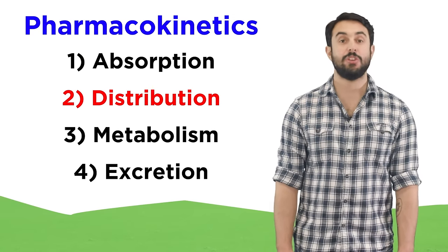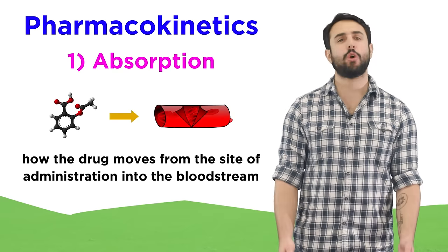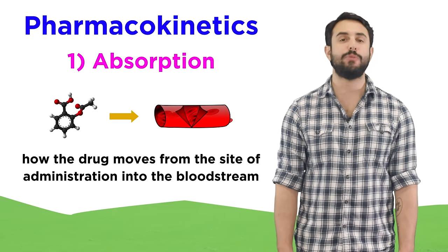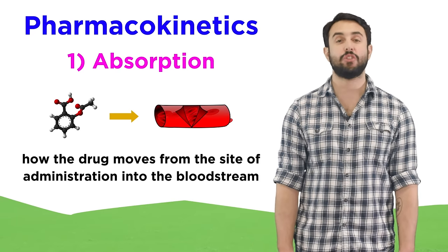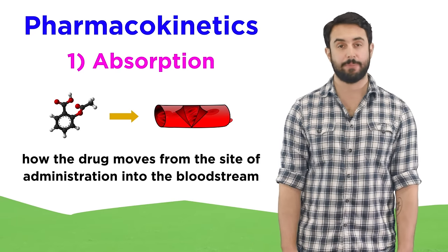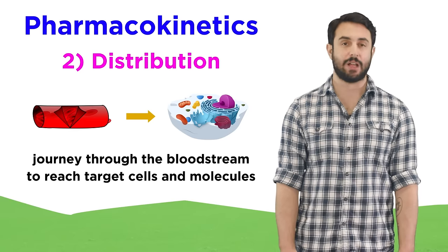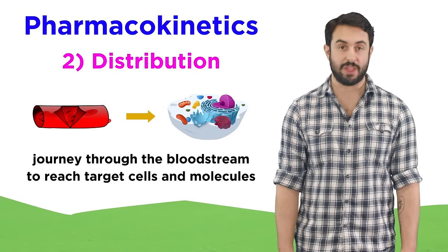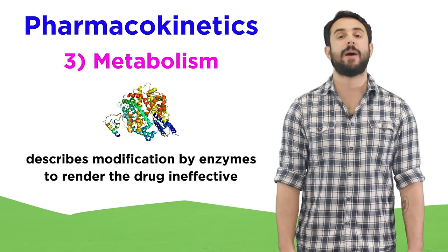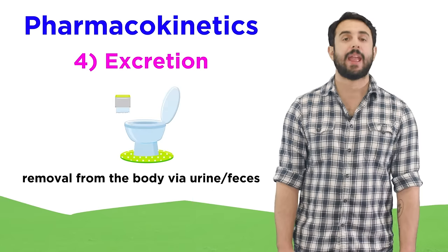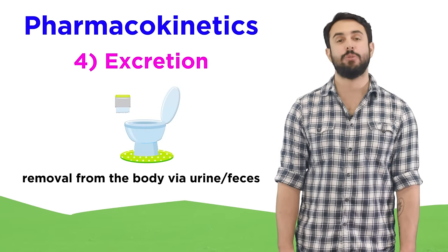Those are absorption, distribution, metabolism, and excretion. Absorption generally describes the way the drug moves from its site of administration across one or more membranes, often into the bloodstream, if it was not administered there directly. Distribution describes its journey through the bloodstream to target cells and specific target molecules within. Metabolism describes the ways that it eventually gets modified by enzymes and rendered ineffective, and excretion describes the way it then exits the body, typically either through urine or feces.